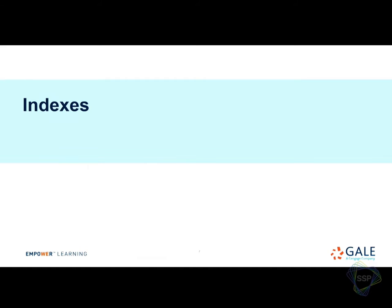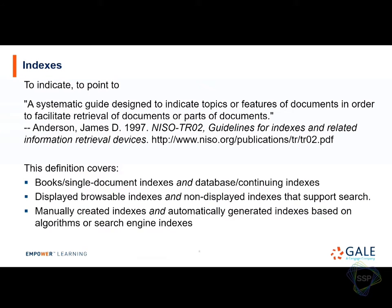So, indexes. I found this nice definition from NISO, the National Information Standards Organization Technical Report: 'A systematic guide designed to indicate topics or features of documents in order to facilitate retrieval of documents or parts of documents.' What's nice about this definition is it's pretty comprehensive — it covers both indexes for a whole document like a book, or parts of it, whether it's periodical indexes or other kinds, whether it's displayed or not, and whether it's manually or automated created.